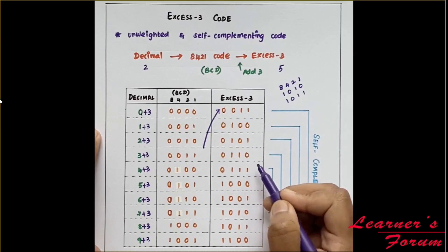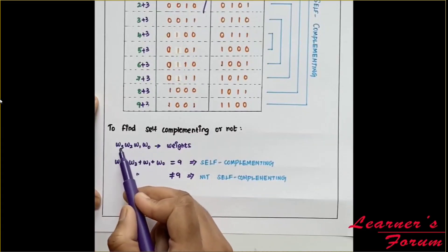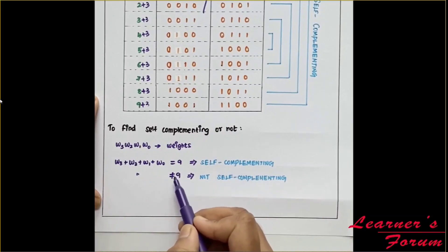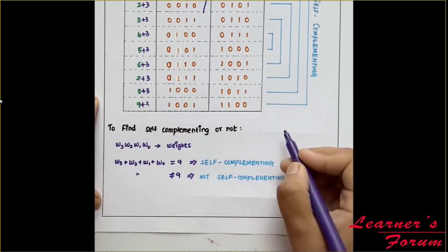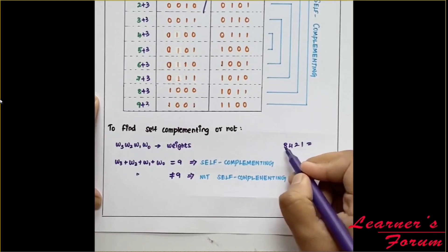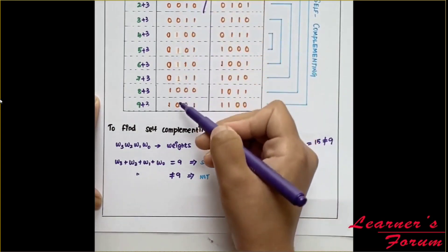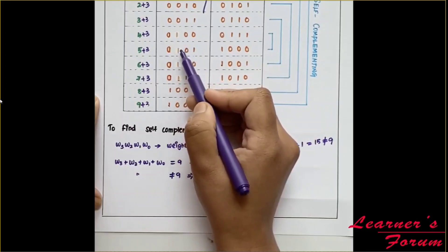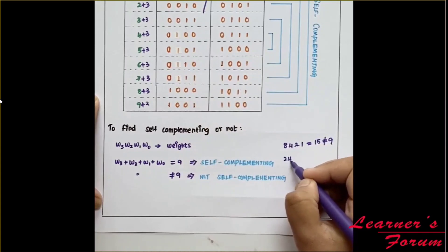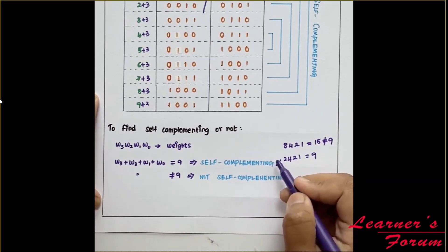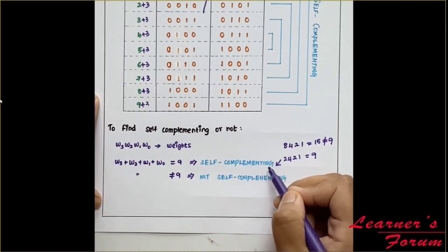Since XS3 is unweighted, to determine if any code is self-complementing, we take the weights W3, W2, W1, W0 and add them all. If the sum equals 9, it is self-complementing; otherwise it is not. For example, for 8421 code: 8 plus 4 plus 2 plus 1 equals 15, which is not equal to 9, so 8421 is not self-complementing. For 2421 code: 2 plus 4 plus 2 plus 1 equals 9, confirming it is self-complementing. This is the procedure to determine whether a given code is self-complementing.